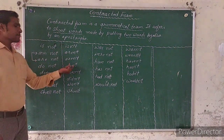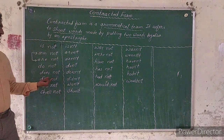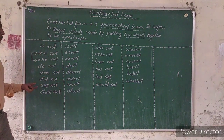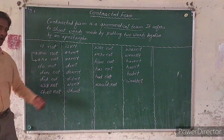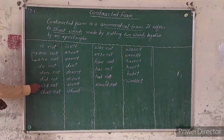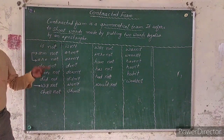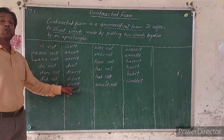Do not → don't. Does not → doesn't. Did not → didn't. Will not → won't. When 'will not' changes, it does not remain 'willn't' — it is converted into 'won't'.